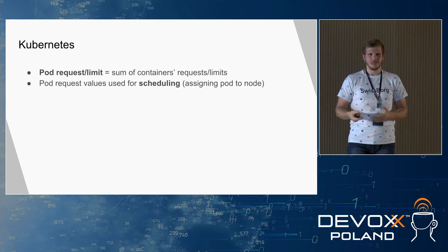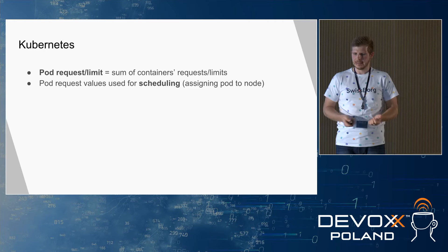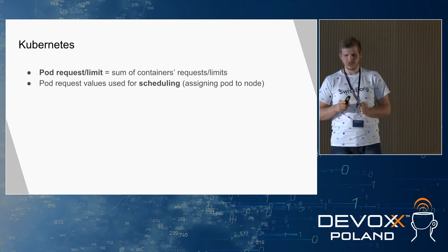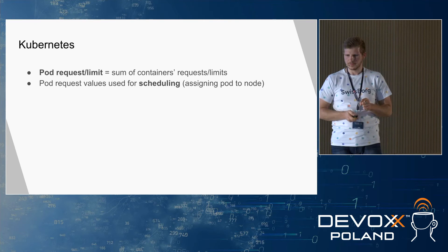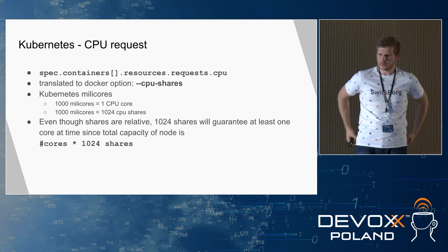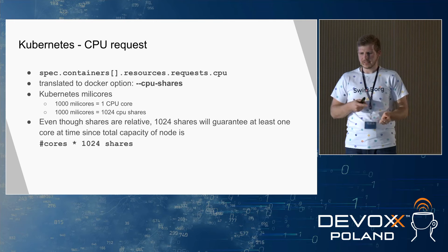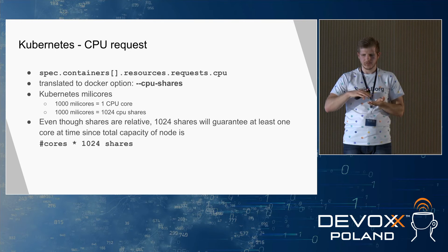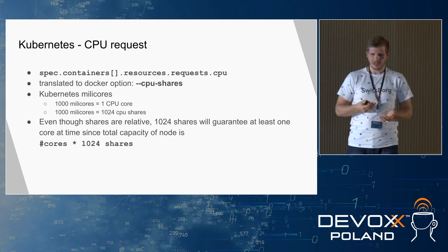Pod requests — not limits — are used by Kubernetes for scheduling: for finding the proper node on which to execute pods. We'll cover four parameters: limits and requests for both CPU and memory. Let's start with CPU requests — this parameter is translated to Docker as the CPU shares option, so the guaranteed amount of processor is enforced by CPU shares.